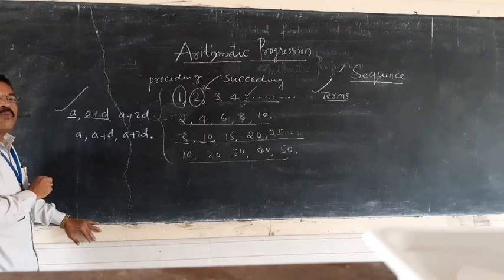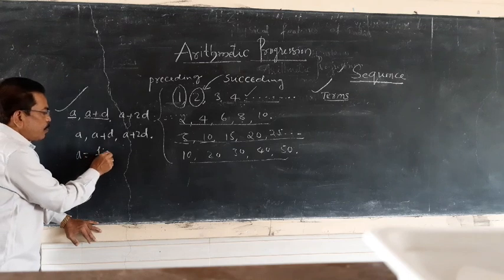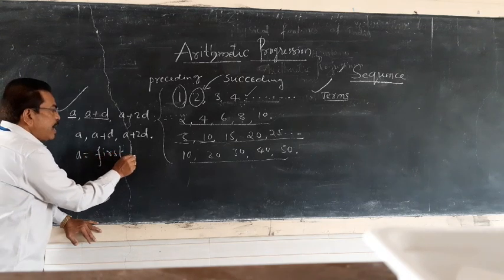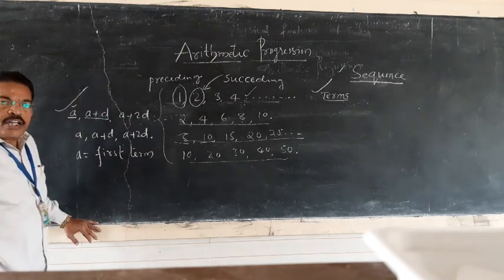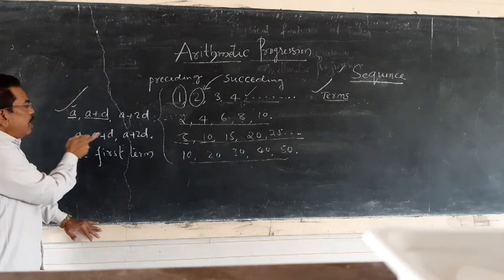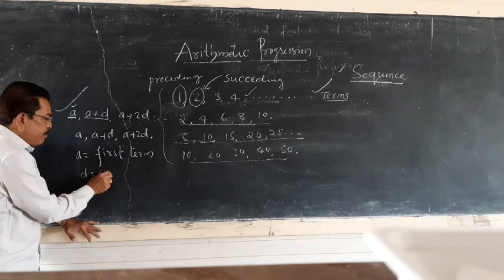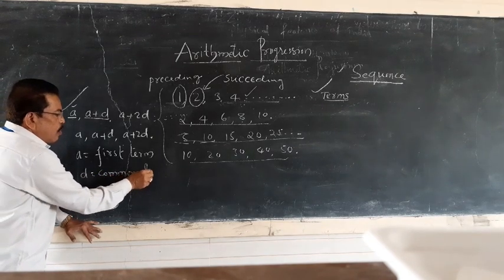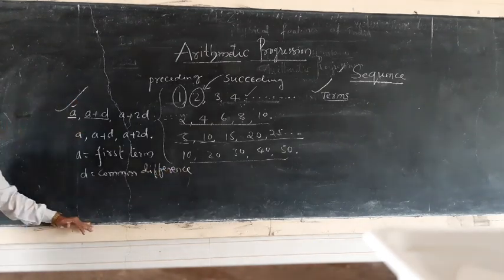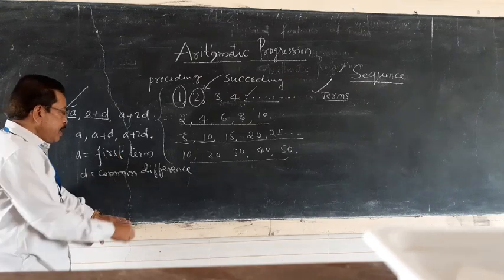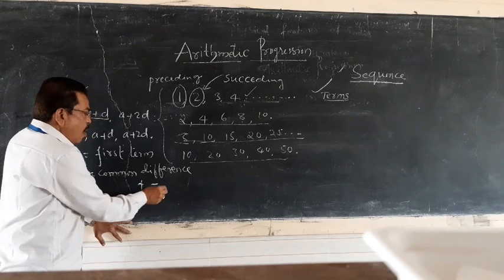So in the general form a, a+d, a+2d, ...: 'a' is the first term, and 'd' is the common difference. One important thing to remember: the common difference can be a positive number, a negative number, or zero.